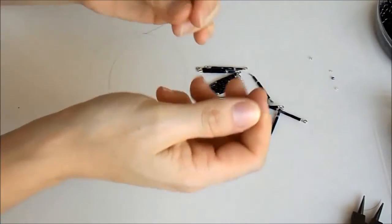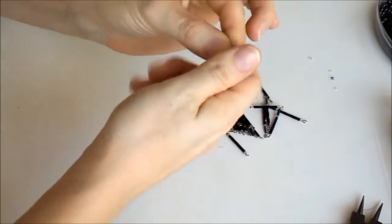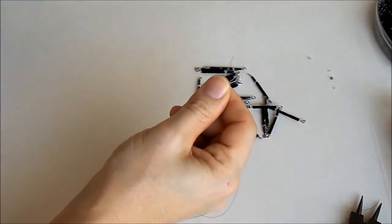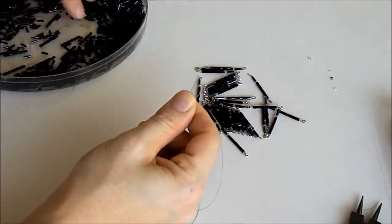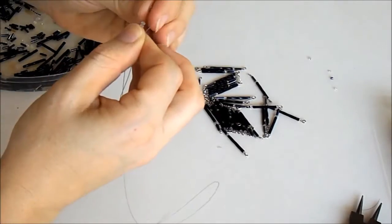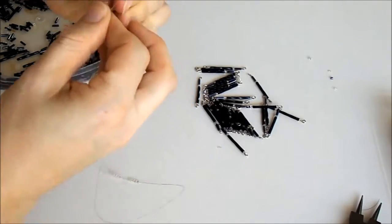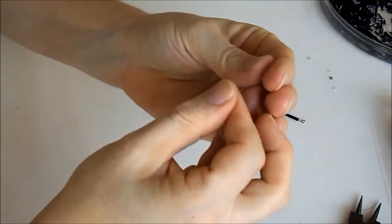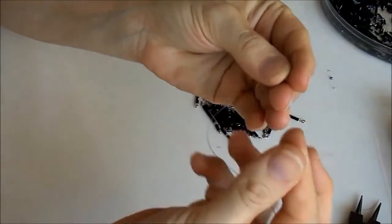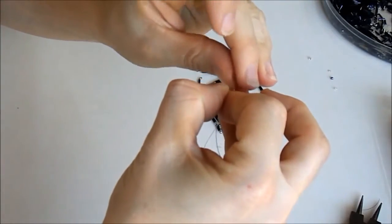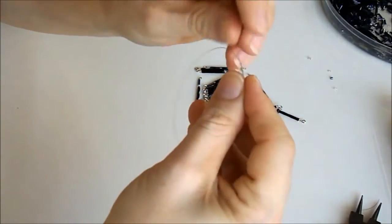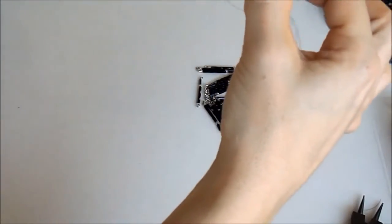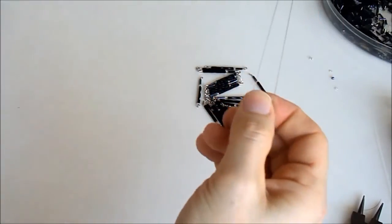Agora eu pego o fio com as duas pontas e vou colocar aqui 12 miçanguinhas. Coloco 12 miçangas, depois com mais uma eu venho aqui, passo por uma ponta e passo a outra ponta ao contrário. Para fechar aqui, junto as duas pontinhas e puxo para centralizar.